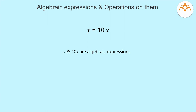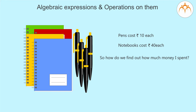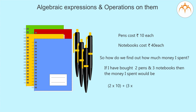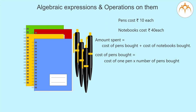Now let us see another example. Yesterday evening I had bought some pens costing 10 rupees each and some notebooks costing 40 rupees each from the shop near my house. How do we find out how much money I spent? If I bought one pen and one notebook, the money spent would be 10 rupees plus 40 rupees. In the form of a formula: amount spent = cost of pens bought plus cost of notebooks bought.